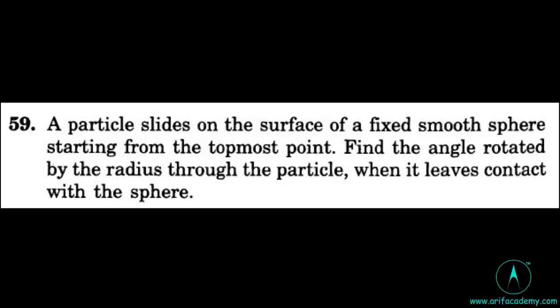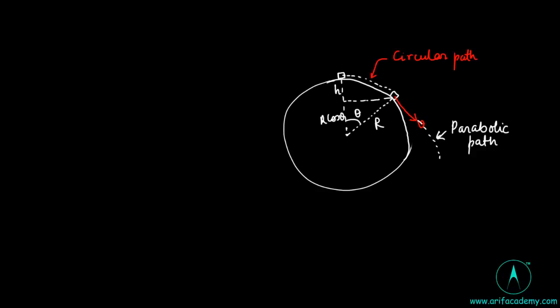A particle slides on the surface of a fixed smooth sphere, starting from the topmost point. Find the angle rotated by the radius through the particle when it leaves contact with the sphere. The particle starts its motion from the top of the sphere with zero speed. At a certain point it leaves the sphere — up to that point its motion was purely circular, and after leaving, its motion is under gravity, so its path is parabolic.